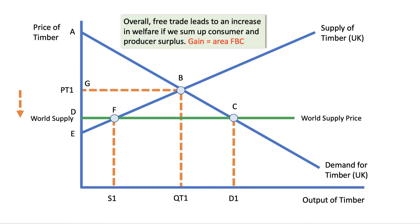There are some caveats to be aware of. For example, what will happen to jobs in the timber industry? Can the factors of production in the UK timber sector easily be switched to other industries with no loss of income? I'm also assuming UK producers passively accept the world price, and that demand and supply curves are linear — often they are not. There are a lot of simplifying assumptions in this model.